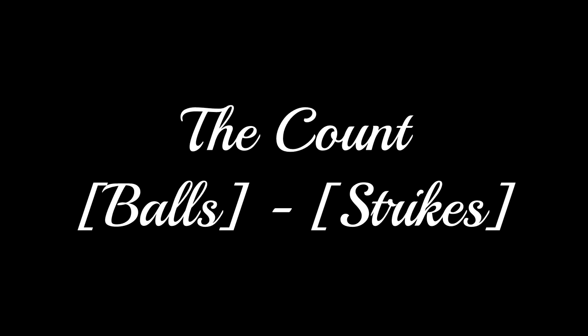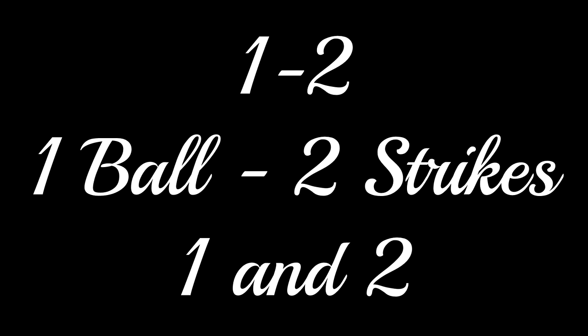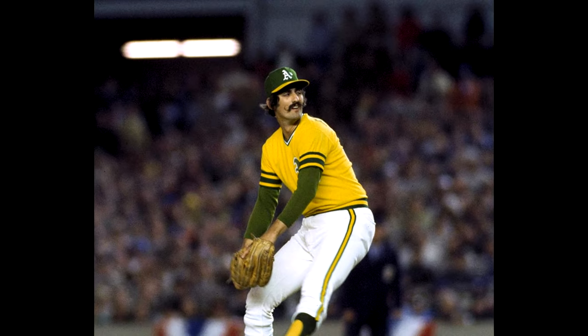During a plate appearance, there will be two numbers that often appear on the screen — this is the count. The count will give the number of balls followed by the number of strikes, formatted as balls-dash-strikes. So a count of 1-2 would mean one ball and two strikes, and is read as 'one and two.' The next pitch in this count is referred to as the 1-2 pitch. When there is a count of 1-1 or 2-2, this is referred to as an even count. A count of 3-2 is referred to as a full count. The count will often change the strategies of both pitchers and batters, with batters typically being more patient when there are a lot of balls in the count, and pitchers being more aggressive when there are more strikes.